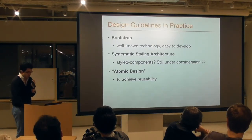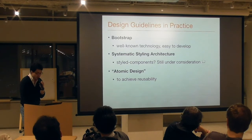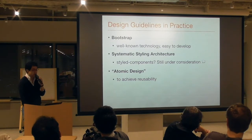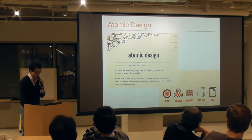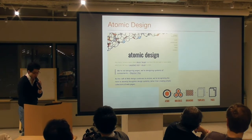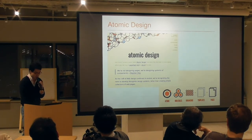Here are some key components of our design guidelines. We rely on Bootstrap because we do not want to maintain CSS definitions. We introduce atomic design for component development. Atomic design is a methodology for creating design systems. There are five distinct levels: atoms, molecules, organisms, templates, and pages. Molecules are composed of multiple atoms; organisms are composed of multiple atoms and molecules, and so on.